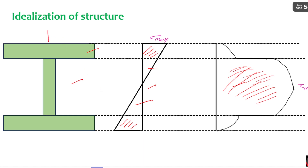Whenever the load acts on the member, the shear force is directly transferred to the web. The web acts like a compression member, like a column where both ends are restrained. There is an axial force in the web similar to axial load in a column. So the major part of the shear stress is taken by the web itself, and only a minor part is taken by the flanges. For this purpose, when the web is connected to the column, the major shear force is transferred. When both flanges and web are connected, it is a moment connection and both shear and moment are transferred.